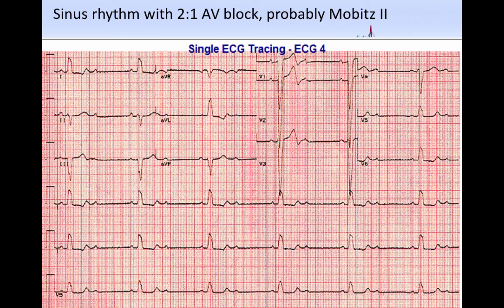Now this slide shows another example of second-degree AV block. In this case, there are twice as many P waves as QRSs. This is 2 to 1. And do we think it's at the level of the AV node or the His-Purkinje tissue? Well, we have to look at the QRS complexes, and they are wide, and that tells us that this is very likely Mobitz II AV block.